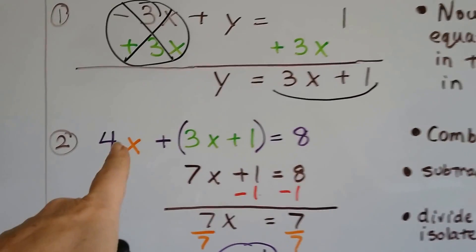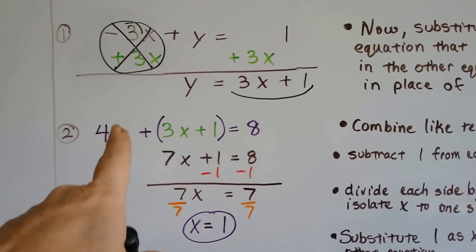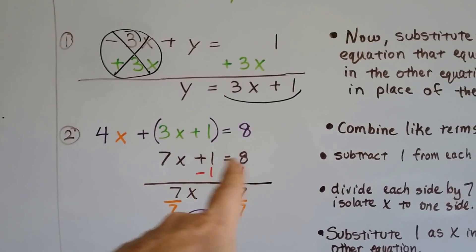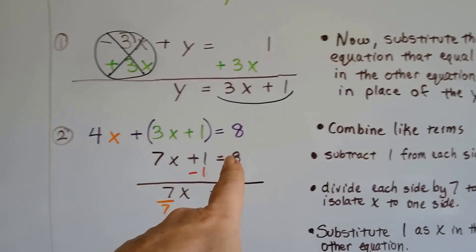So what we need to do is combine like terms. We've got 4x plus 3x plus 1. Well, 4x and 3x is 7x plus 1. So now we have 7x plus 1 equals 8.